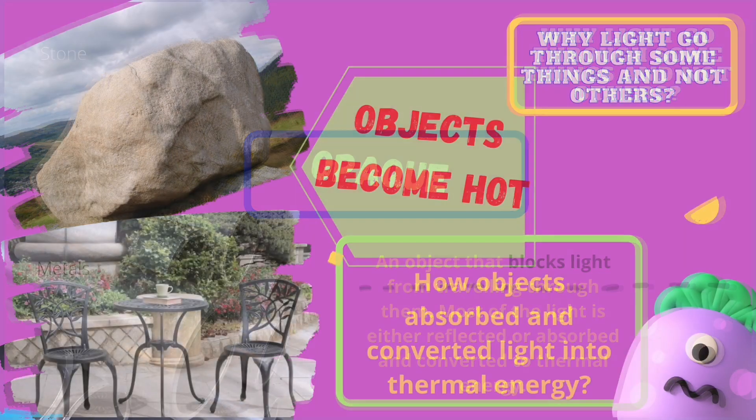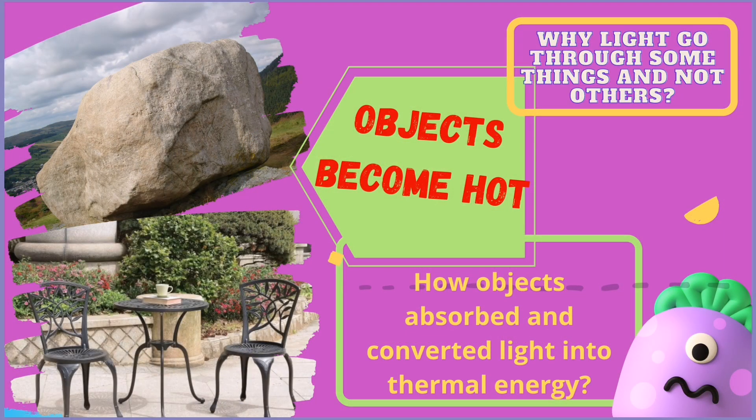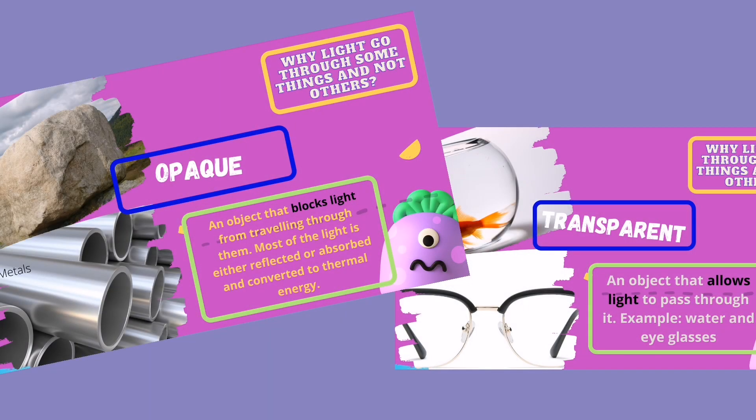then those objects that do not allow light to pass through them are called opaque objects. Examples include stone and metals. If you put metals outside under the heat of the sun for five hours and then touch them, you will notice they are hot — they absorbed the light from the sun and converted it to thermal energy.